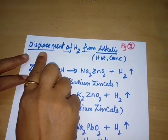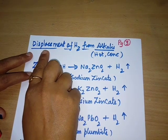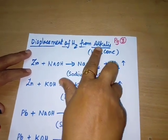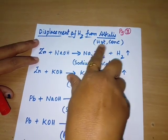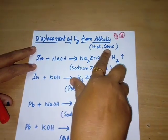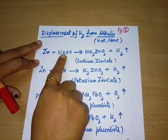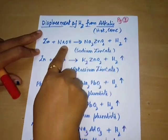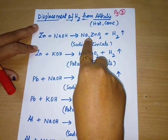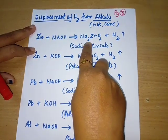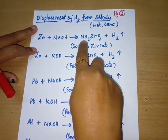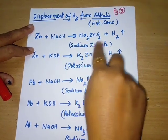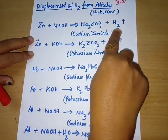The third method of preparing hydrogen is displacement of hydrogen from alkalis. The condition of the alkalis is hot and concentrated. When zinc reacts with hot and concentrated sodium hydroxide, it forms a soluble salt called sodium zincate (Na₂ZnO₂) plus hydrogen gas.